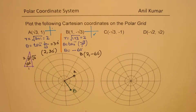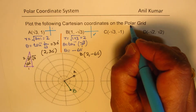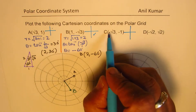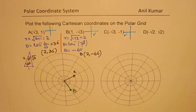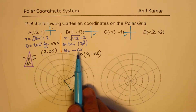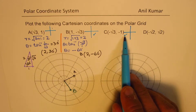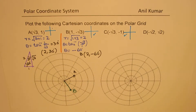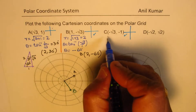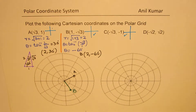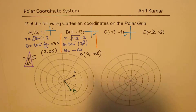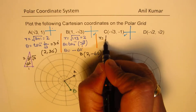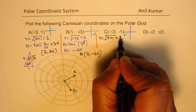Now let's look into the next coordinate point — (-√3, -1) — which is in quadrant 3. As far as tan is concerned, we normally get values in quadrants 1 and 4, so we have to make an adjustment. The magnitude r again is √(3 + 1), so r equals 2.